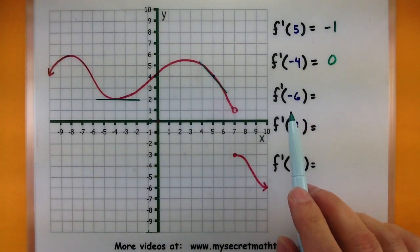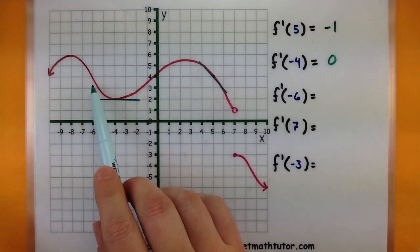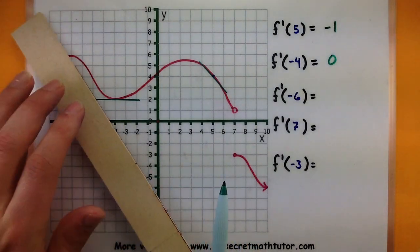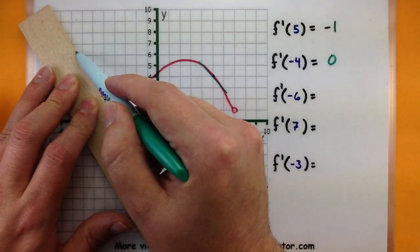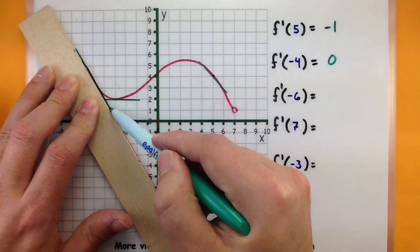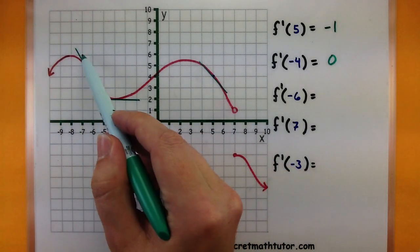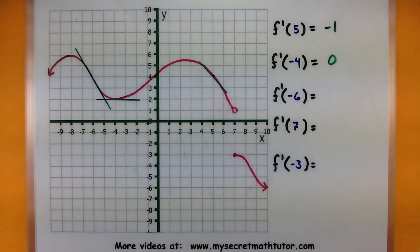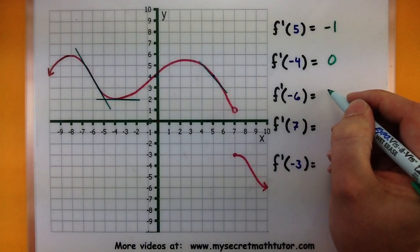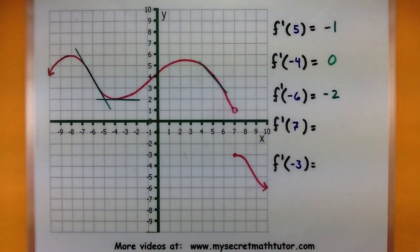All right let's see what is the derivative at the point negative 6. So let's see that guy's right there. Let's go ahead and draw in the line. Let's see what we can do. Well this one looks like it decreases by 2 and then over 1 down 2 over 1. So I'm going to say negative 2 over 1 or simply negative 2 for the slope of that tangent line. Not bad.